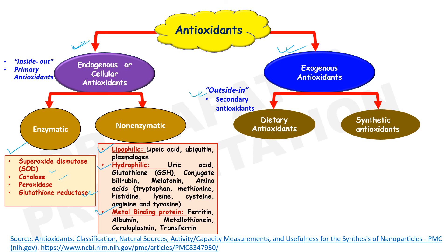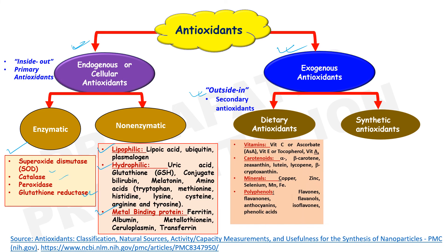Dietary antioxidant examples are vitamins including vitamin C, E, and A; carotenoids including alpha-carotene, beta-carotene, zeaxanthin, lutein, lycopene, and beta-cryptoxanthin; minerals such as copper, zinc, selenium, manganese, and iron; and polyphenols including flavones, flavonols, anthocyanins, isoflavones, and phenolic acids.